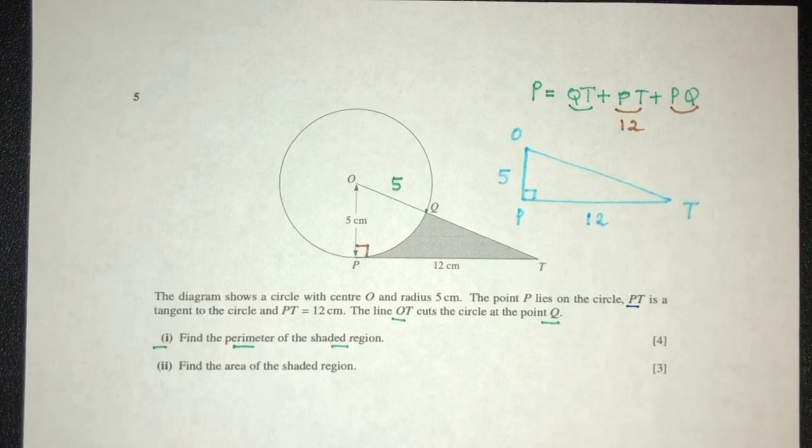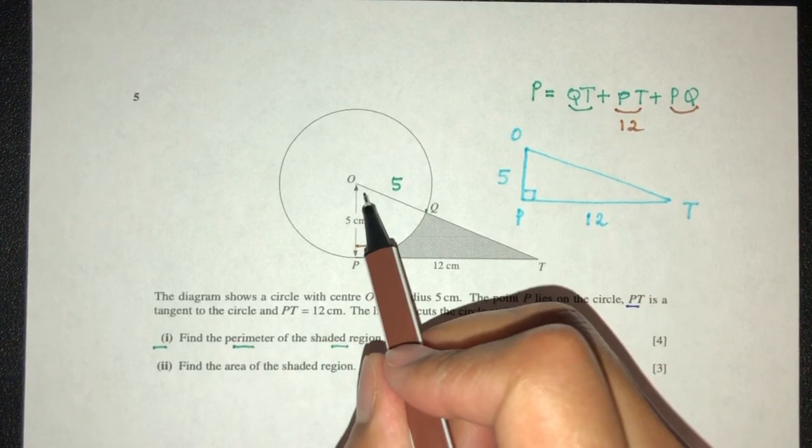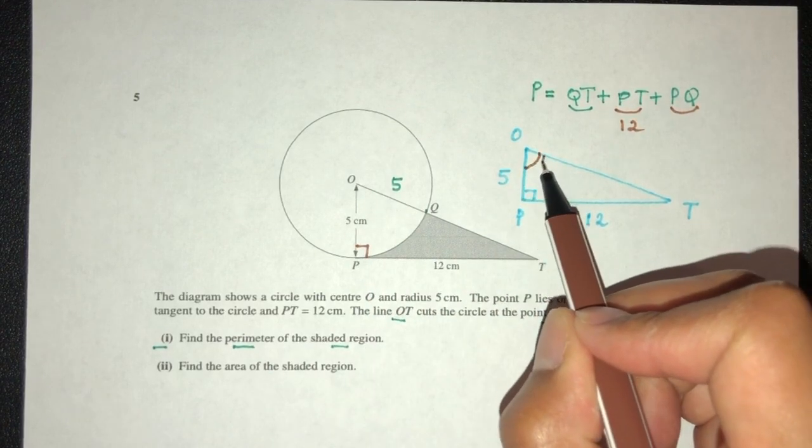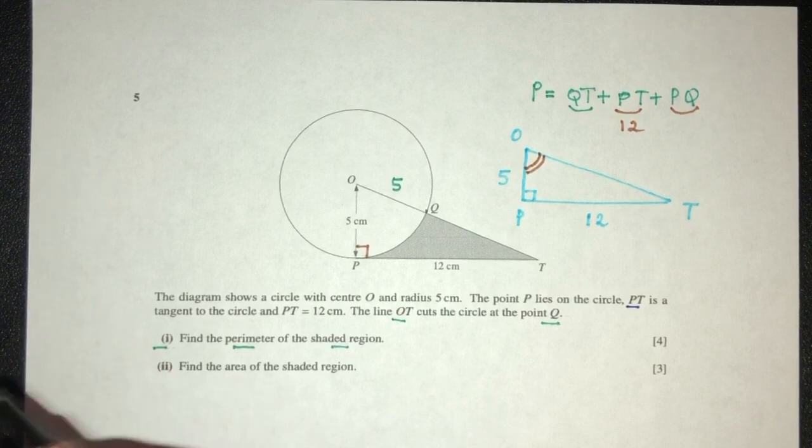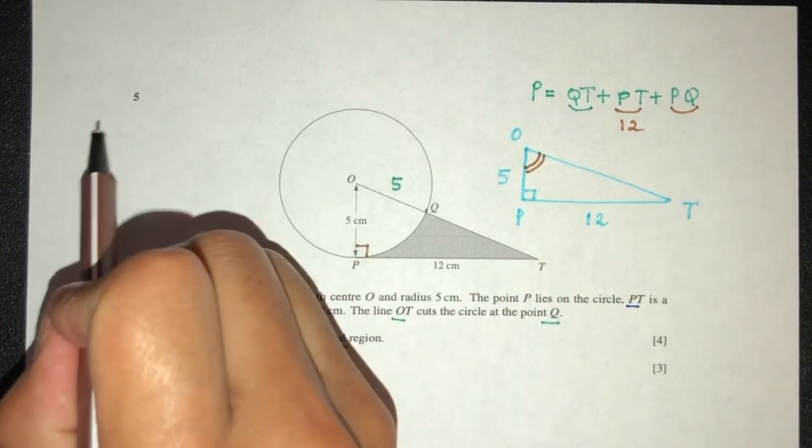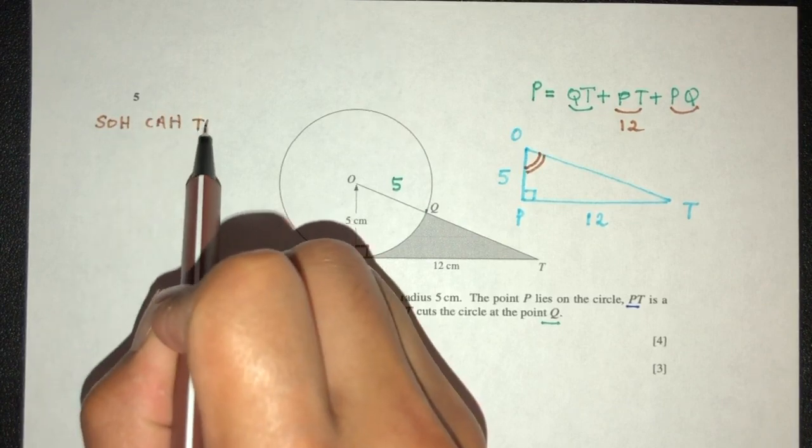Now to find the side PQ, we know it is length of arc. We have to find the angle. This angle. Right. Now to find this angle, obviously we can use SOH CAH TOA because it is a right angle triangle. So let's use SOH CAH TOA. That's the first step.